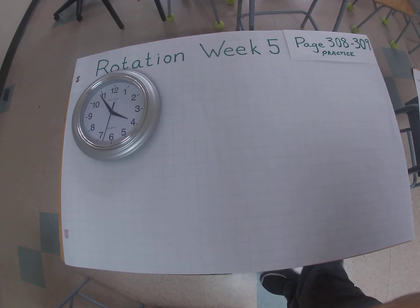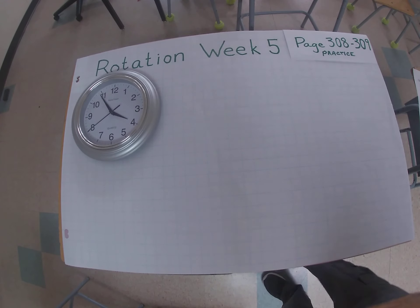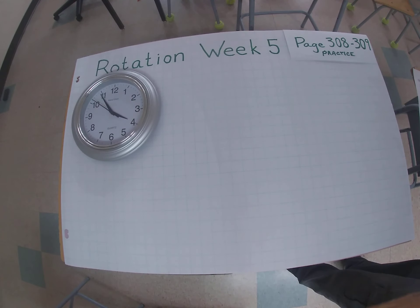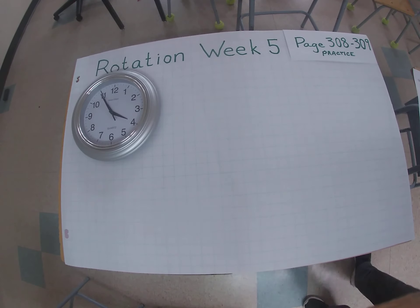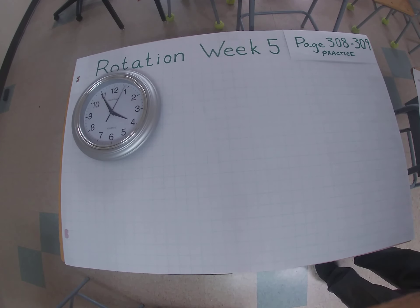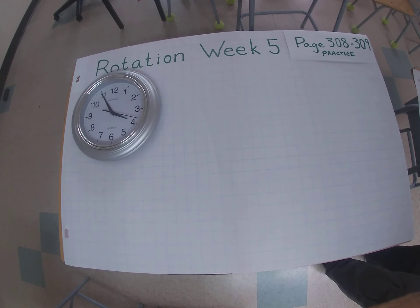We're back and this is week five, grade five rotation, the third video. Turn to page 308 of your textbook, the bottom of the page, the section called Practice. Follow along as I read the directions for number one: copy each shape below on grid paper, use a pencil and ruler, and do it as neatly as possible. For each shape, rotate the shape about vertex V using the rotation given.